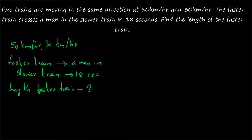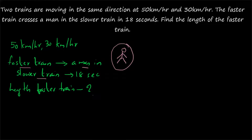In these types of questions, the main point to note is: what is the distance travelled? The faster train is crossing a man in the slower train. A man in the slower train means the slower train is moving, but the man serves as a reference point remaining in a particular position. This is similar to a train crossing a stationary object. We use relative speed, and the distance travelled will be equal to the length of the faster train.